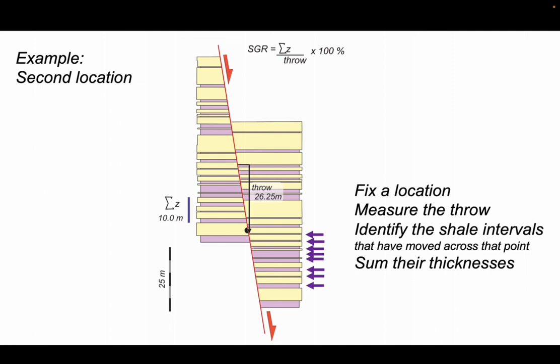Let's plug these values now for throw and sigma z into our SGR formula. If we solve this calculation, we see that the SGR for this particular point in the fault is 38.1%.